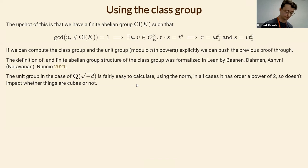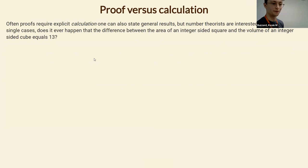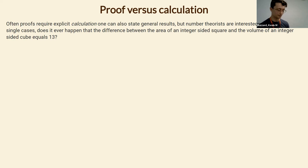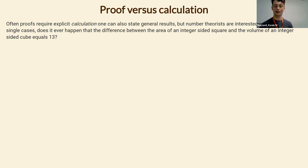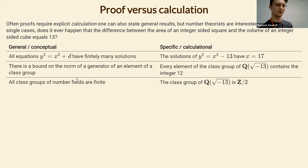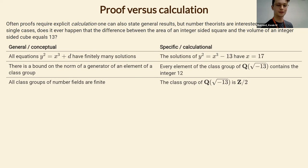I want to be philosophical for a moment about the difference between proving general results and doing explicit calculations, especially when formalizing. We've seen a proof that the class group is finite, but we don't just want finiteness — we want to know the order, so we can check it's coprime to three. Knowing it's finite is not enough; you need a proof of finiteness that actually computes the order, or you need to separately compute it.